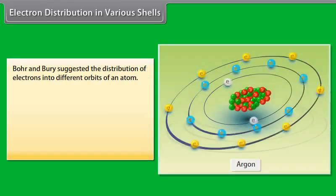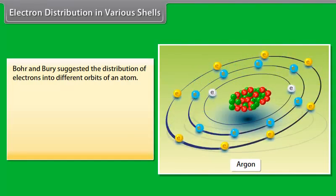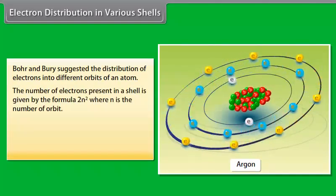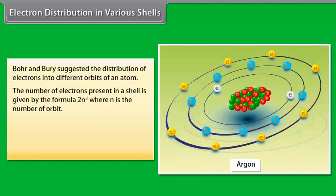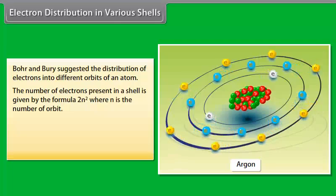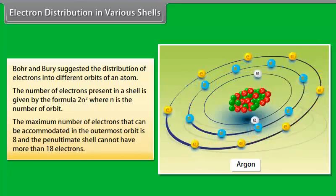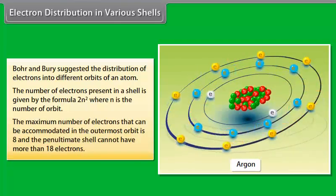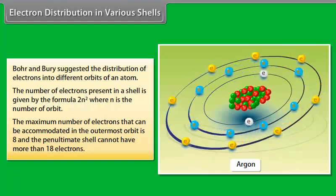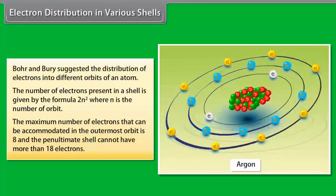Electron distribution in various shells. Bohr and Burry suggested the distribution of electrons into different orbits of an atom. The number of electrons present in a shell is given by the formula 2N squared, where N is the number of orbit. The maximum number of electrons that can be accommodated in the outermost orbit is 8, and the penultimate shell cannot have more than 18 electrons.